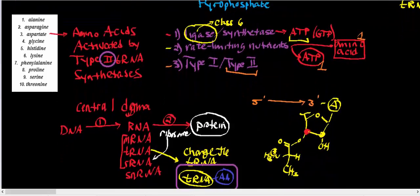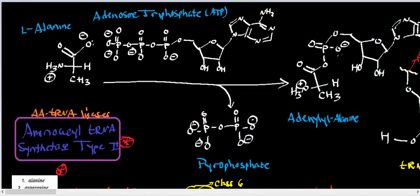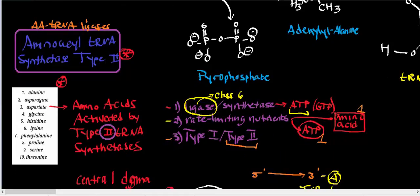Here is an exhaustive list of all 10 amino acids that type 2 tRNA synthetases react with: alanine, asparagine, aspartate, glycine, histidine, lysine, phenylalanine, proline, serine, and threonine. The other 10 amino acids react with the type 1 tRNA synthetases. Notably, the distribution is completely symmetric — exactly 10 amino acids for each type of synthetase.